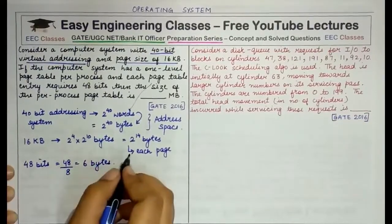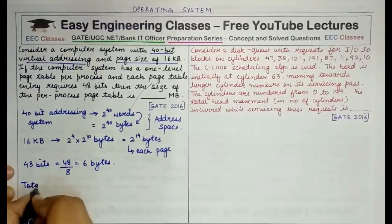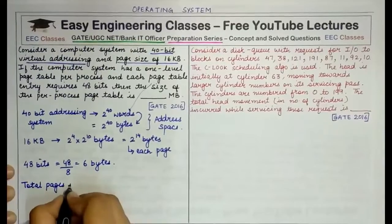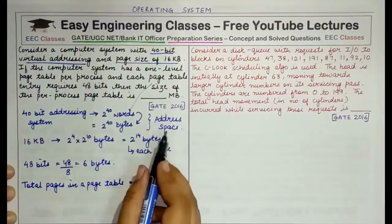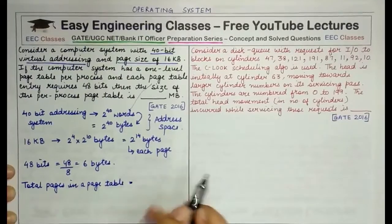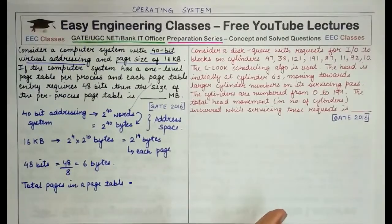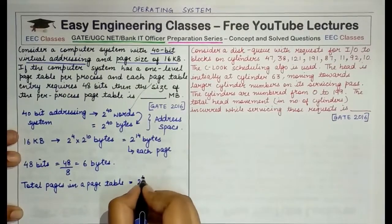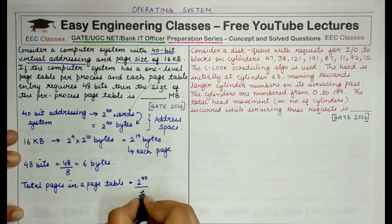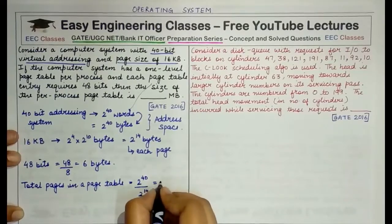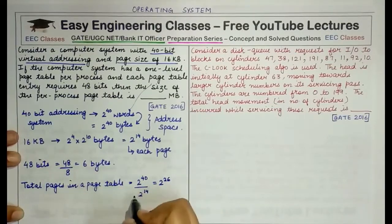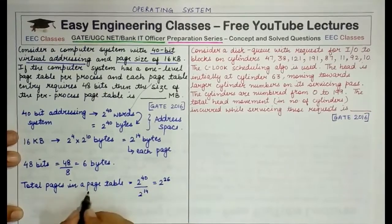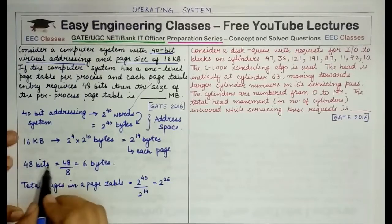Putting all this information together: the total number of pages in a page table is given by the total address space divided by the size of each page. So that is 2^40 divided by 2^14, which equals 2^26. So the total number of pages in one page table is 2^26, and each entry requires 6 bytes.